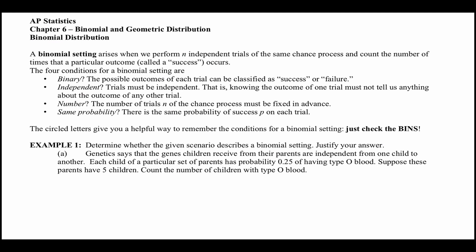Anything binary has two options. True/false tests are binary because you have two options: true or false. Computer programming is sometimes called binary because it's only zeros and ones. So there are two options for all of these: success or failure. No third option. Independent — each trial is independent of each other. Knowing the outcome of one trial must not tell us anything about the outcome of any other trials.